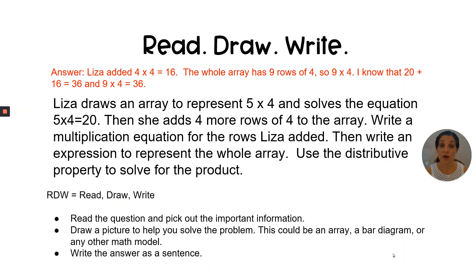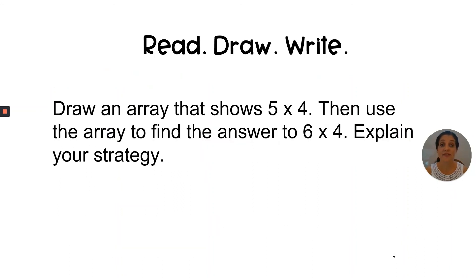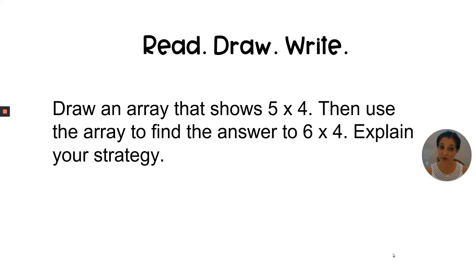Now it's time for you to do a read, draw, write question on your own. I will read this for you, then you will pause the video and figure it out independently. Pick out the important information, draw a model to solve for the answer, and write out in sentence form what the answer is and how you arrived at your solution. After you've done your very best, check the description box below to find the answer and compare. Draw an array that shows 5 times 4, then use the array to find the answer to 6 times 4. Explain your strategy. Go do your very best, and I will see you in the next video.